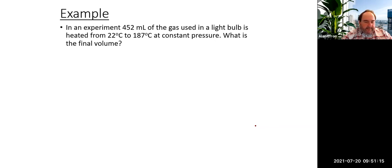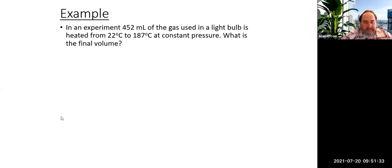We've been talking about gas laws. Let's try this example: an experiment has 152 milliliters of gas that goes from 22 to 187 degrees Celsius. What is the final volume? Take a moment and see what you come up with.